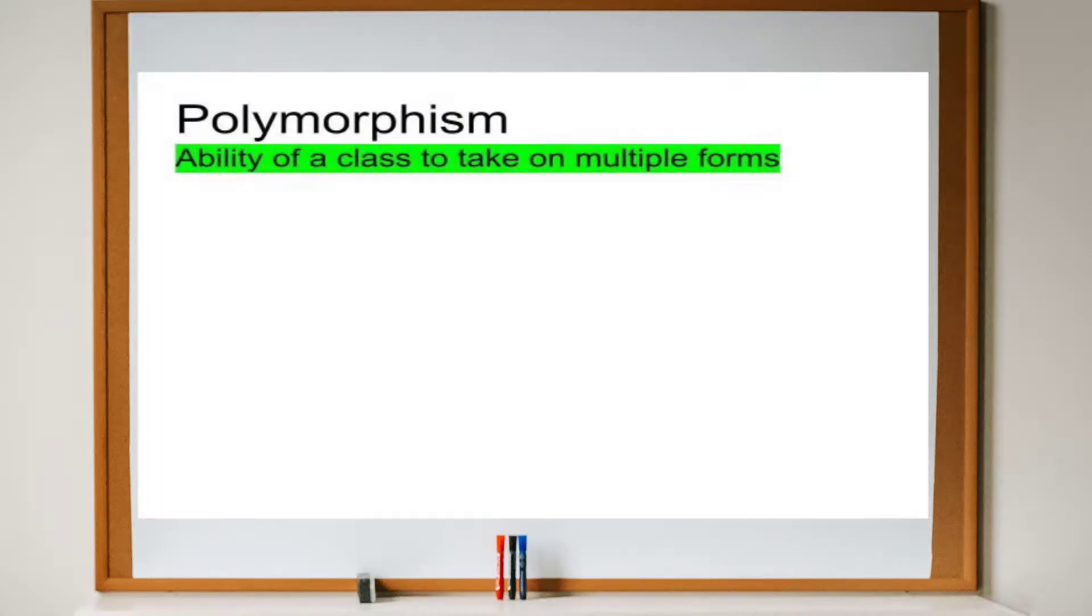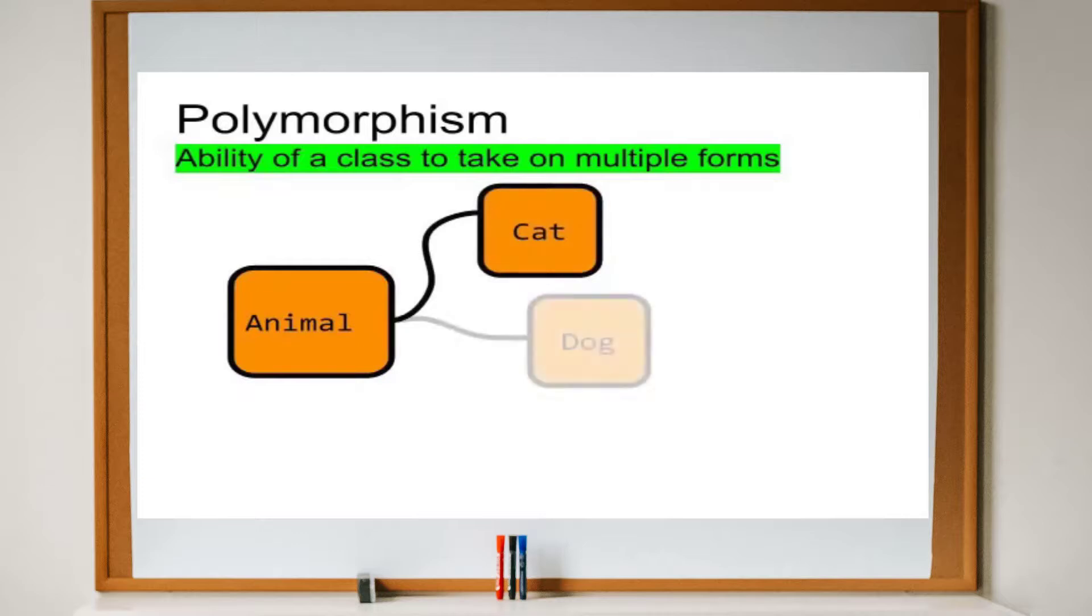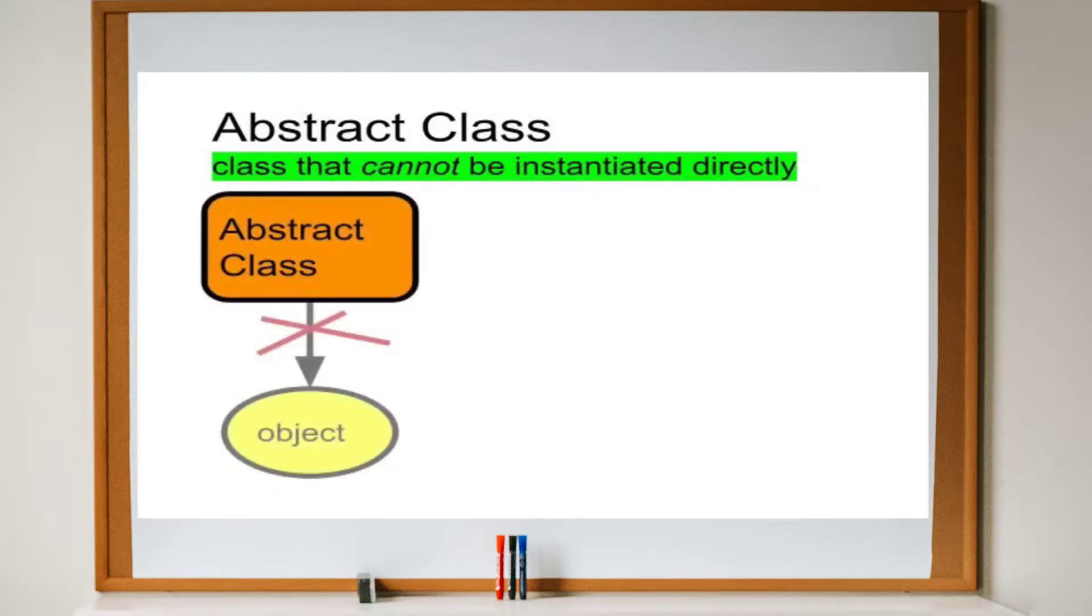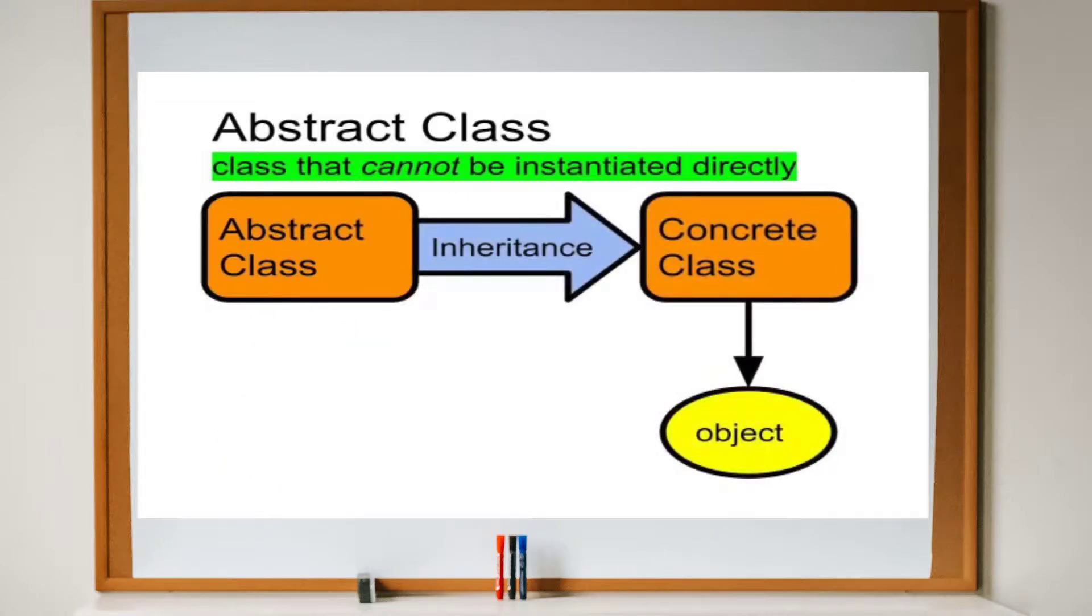Polymorphism comes from the word polymorph, which literally means a thing with many forms. In object-oriented programming, polymorphism is the ability of an abstract base class to take on multiple forms through its derived classes. An abstract class is a class that cannot be instantiated as itself. Instead, it serves as a base class from which more concrete classes inherit their attributes and behaviors.